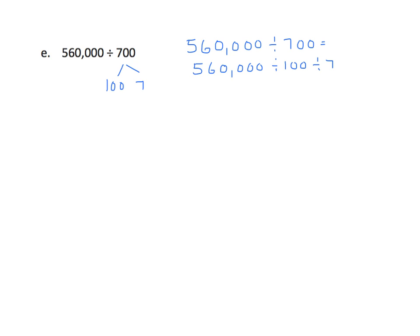We'll work this from going from left to right. So I have 56,000 divided by 100, and now I get 5,600. We'll divide that by 7, and we get 800. So the answer is 800.